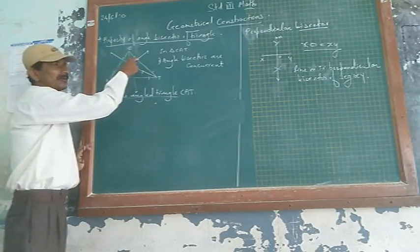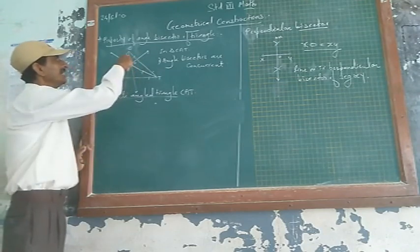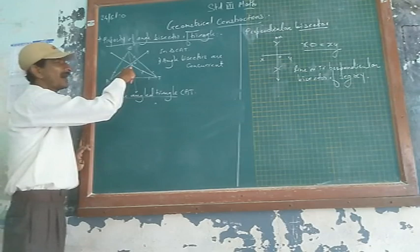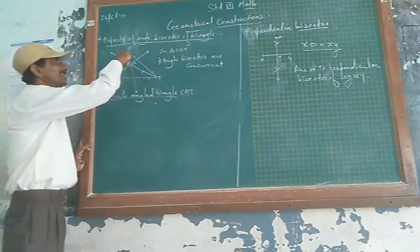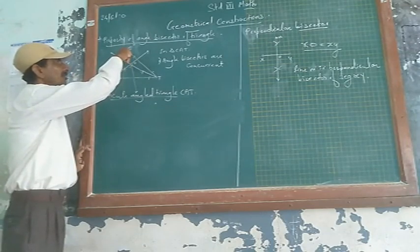From the arcs on the sides, you will get point of intersection of arcs. This point of intersection arc as well as the vertex of the angle, draw a line.